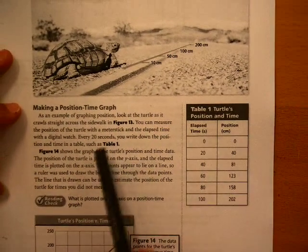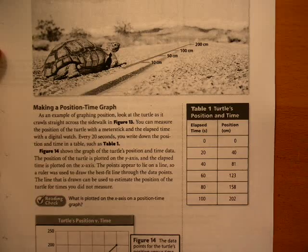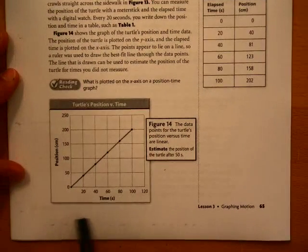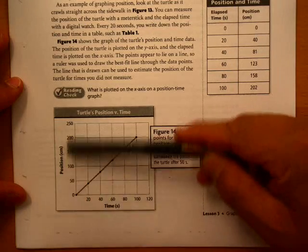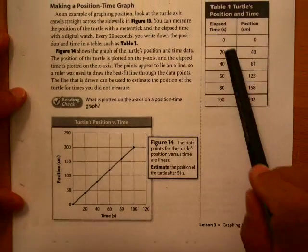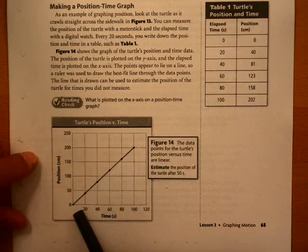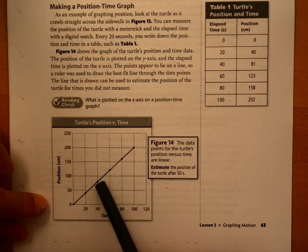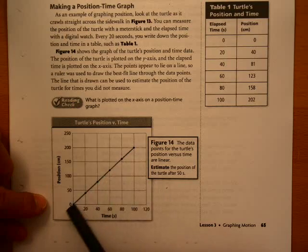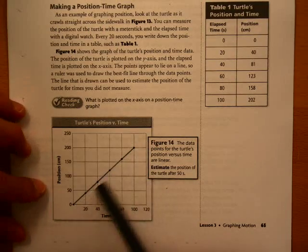The position time graph always uses the time here on the x-axis, and the position would be here on the y-axis. The data points would be plugged in, 0-0, 20-40, looks like 40-81 is right here, and they kind of go in this straight line. We call this a linear graph.